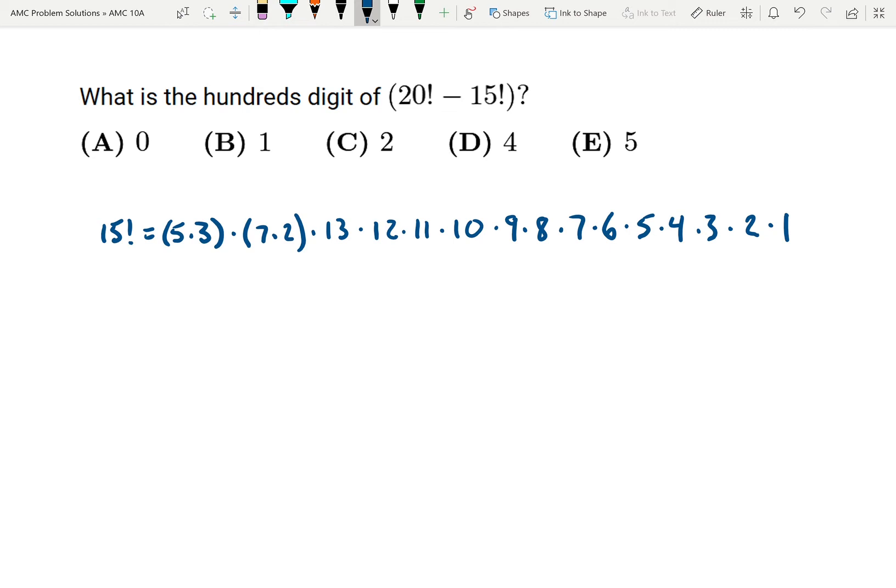I rewrote 15 factorial in this kind of helpful way, and you'll see why it's helpful in a second. Basically, this is 15 but I just wrote it as 5 times 3, and I wrote 14 as 7 times 2. I'm going to show why that's helpful.